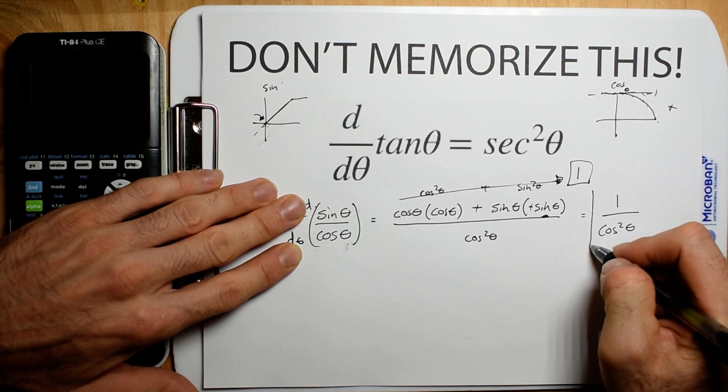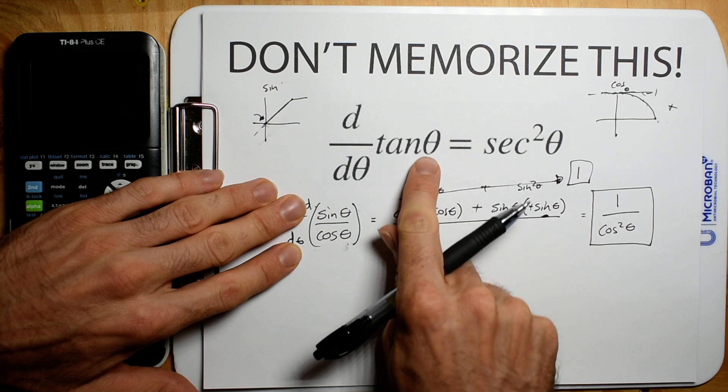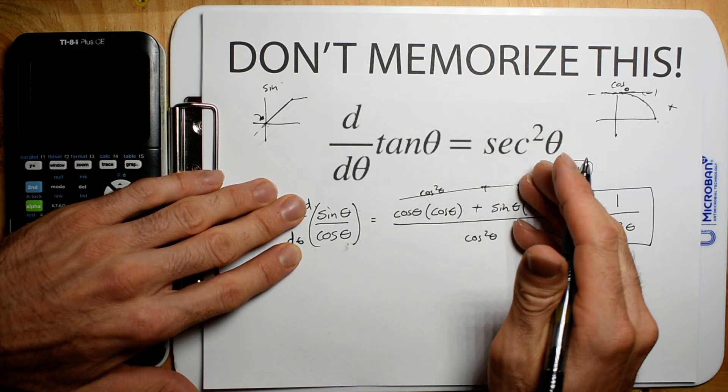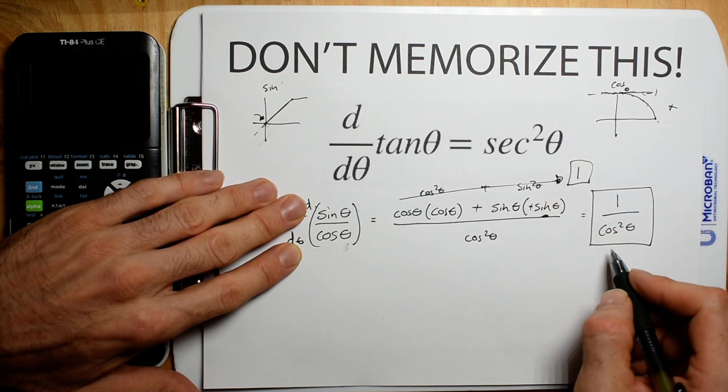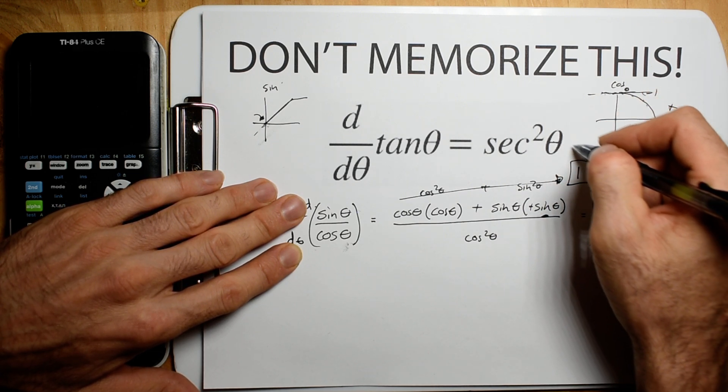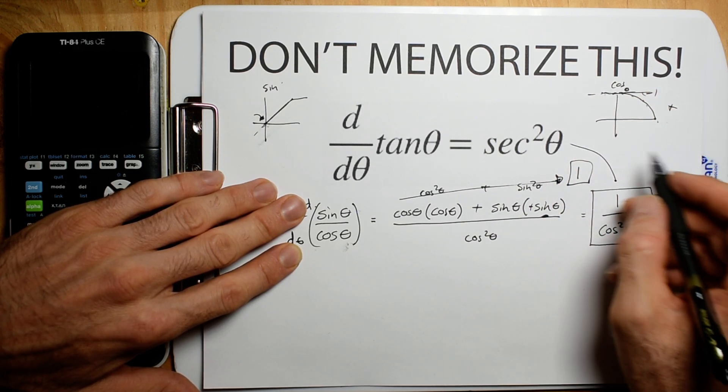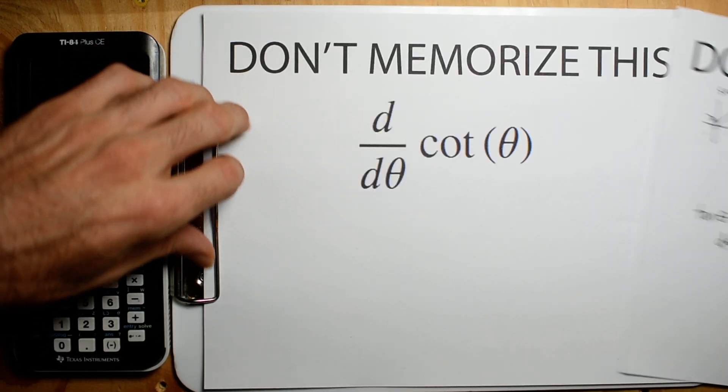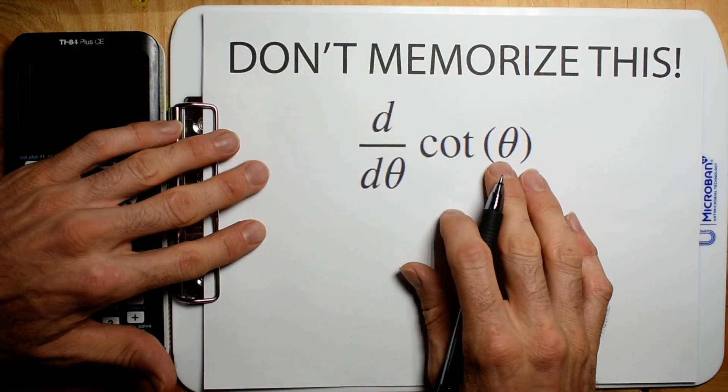And why not just be done right there? Why not know tangent theta is 1 divided by cosine squared theta, and not even have to bother with secants. But anyway, these two are synonymous. Alright, so we're going to do one more, because we definitely have time to do this. We can do cotangent.